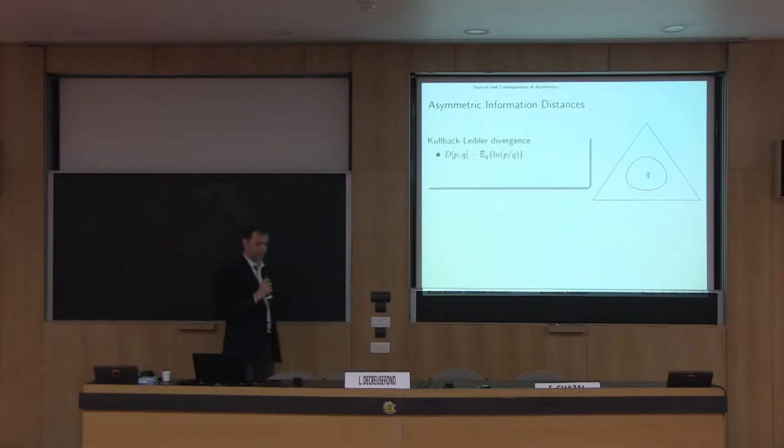If we imagine a simplex of probability distributions or measures, we want to define some kind of divergence or distance function. A very nice, useful one is the Kullback-Leibler divergence, very well known. It is very important because it's actually unique in this sense. It's the only one that satisfies Khinchin axiom. It decomposes into a sum for independent variables.